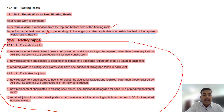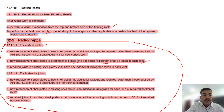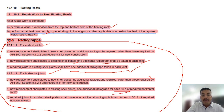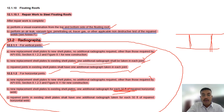For radiography requirements in API 653 — you will get one question. For vertical joints: new replacement shell plate to existing shell plate requires one additional radiograph at each joint; repaired joints in existing shell plates shall have one additional radiograph taken at each joint. For horizontal joints: new replacement shell plates to existing shell plates require one additional radiograph for each 50 feet of horizontal weld; repaired joints in existing shell plates require one additional radiograph for each 50 feet of repaired horizontal weld.